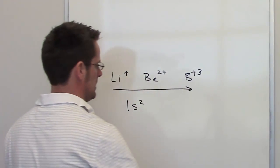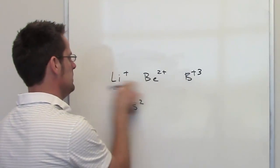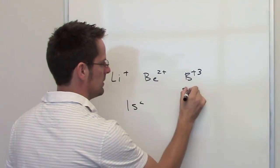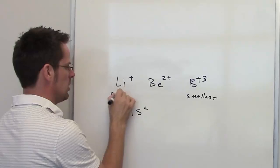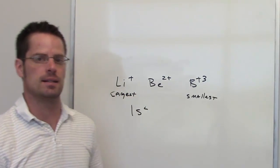Thus, I would expect that boron would be the smallest, while lithium would be the largest, and beryllium would be right in the middle.